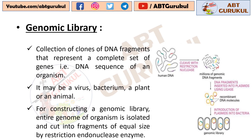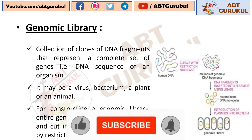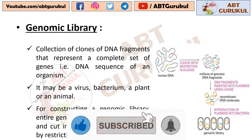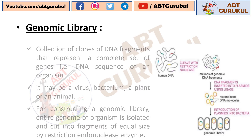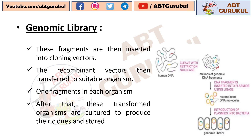For example, the collection of all the clones obtained from the genome of E. coli collectively represents the genomic library of E. coli. For constructing a genomic library of an organism, its entire genome is isolated and cut into fragments of equal size by restriction endonuclease enzyme. These fragments are then inserted into a cloning vector, and the recombinant vectors are transferred to suitable organisms such as bacteria, yeast, or a virus — one fragment in each organism — and then these transformed organisms are cultured to produce their clones and stored.